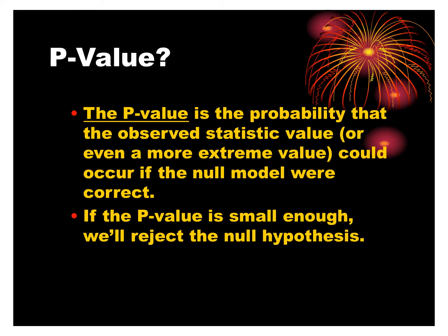Our z-score is our sample proportion minus our hypothesized proportion, divided by the standard deviation. What we get from normalCDF is the probability of getting our sample if the null hypothesis were true — the probability that the observed statistic or something more extreme could occur if the null model were correct. If the p-value was small enough in the cookie game, you would reject the hypothesis that the deck was fair.